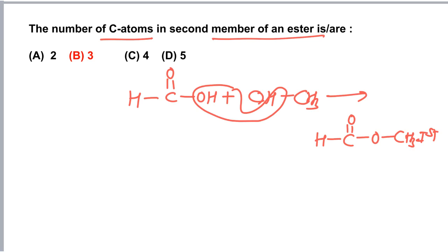For the second member we have to add a CH2 unit. So CH3-C double bond O-O-CH3 is the second member of ester which has a total of three carbons, and hence the correct answer is B.